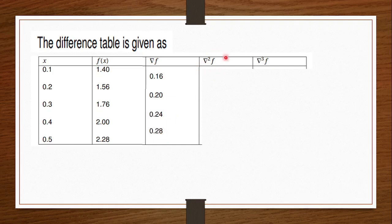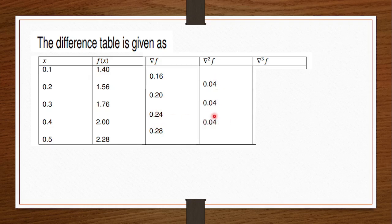Moving to the second differences, we find the difference between consecutive first-difference values and record results. Continuing for the third and fourth differences, the values are all zero, since zero minus zero equals zero.